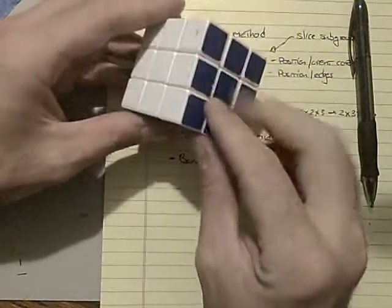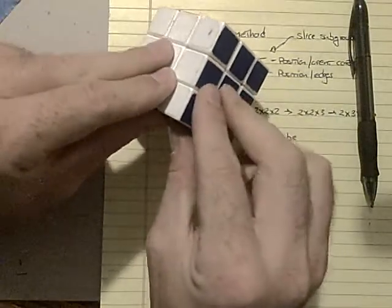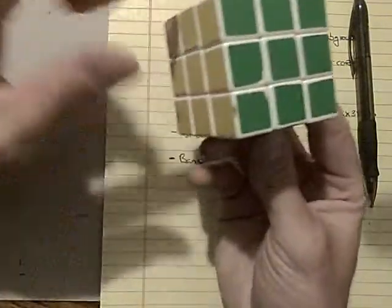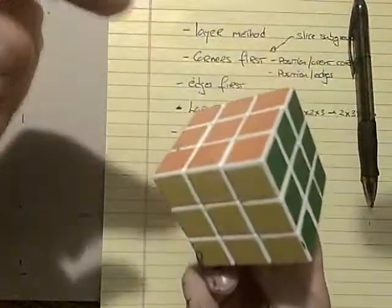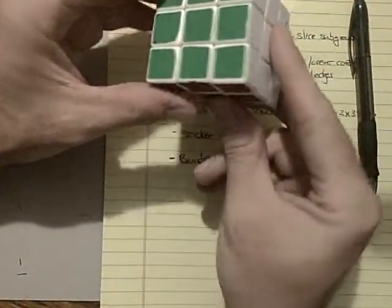And another good variation is to bandage this whole 2x2. And so you'll only have access to f, r, and u. So it's a subgroup, whatever that is. I'll talk about that in the future of the cube.